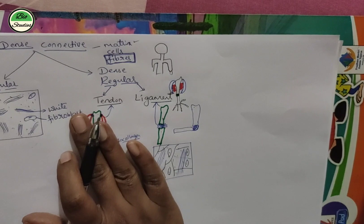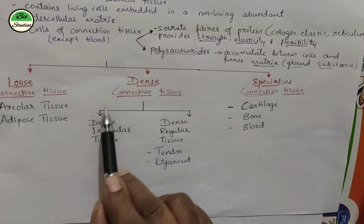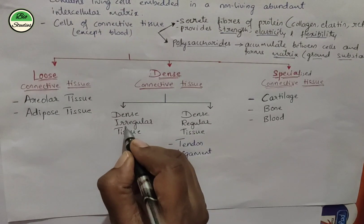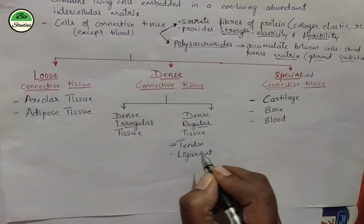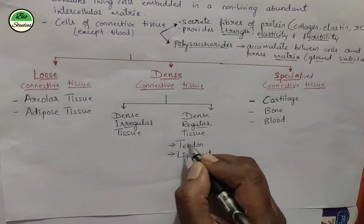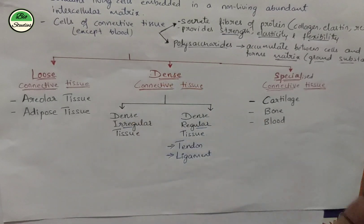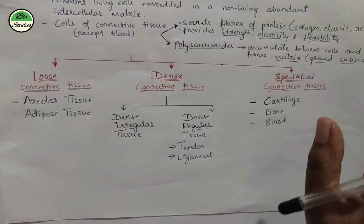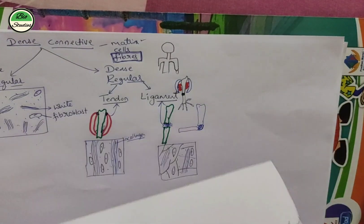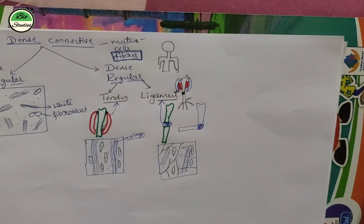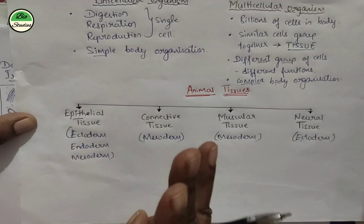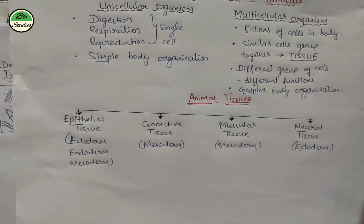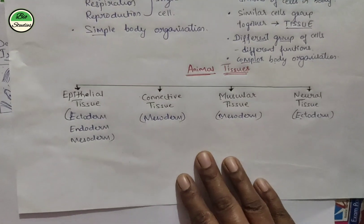All connective tissues help connect different tissues in the body. In this video, we studied dense connective tissue — dense irregular and dense regular (tendon connecting skeletal muscle to bone, and ligament connecting bone to bone). In the previous video, we covered loose connective tissue: areolar and adipose. In the next video, we will study specialized connective tissue — cartilage, bone, and blood. Stay safe, stay home. Thank you for watching.